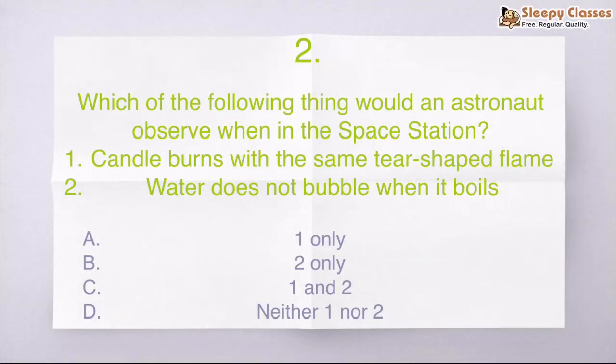Which of the following would an astronaut observe when in the space station? So comparing space station and Earth, what will astronaut observe when sitting in space station? Will the candle burn with the same tear-shaped flame as seen on Earth? And second statement, does water not bubble when it boils? So you can pause.